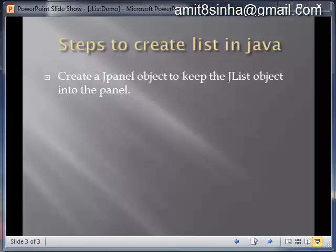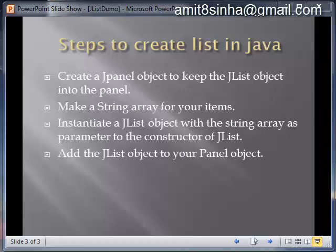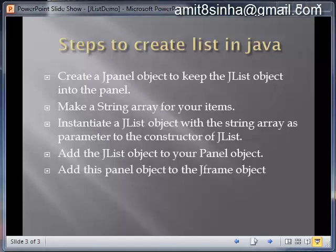Create a JPanel object to keep the JList object in the panel. Make a String array for your items. Instantiate the JList object with the String array as a parameter to the constructor of JList. Add the JList object to your panel object, then add this panel object to the JFrame object.